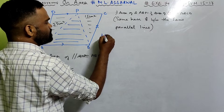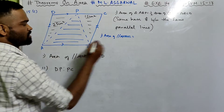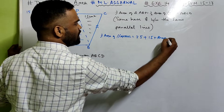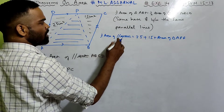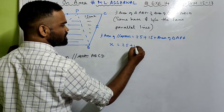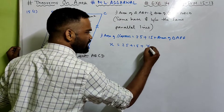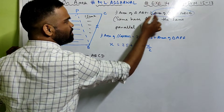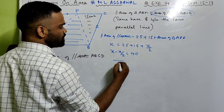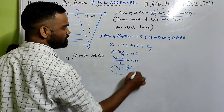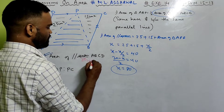So the area of the parallelogram x equals 25 plus 15 plus area of triangle ABP. Now area of triangle ABP is half the area of parallelogram ABCD, which is x/2. So x equals 40 plus x/2, meaning x minus x/2 equals 40, which gives x equals 80. So the area of the parallelogram is 80 cm².